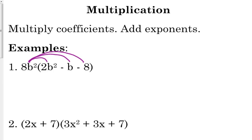So we multiply the coefficients. Eight times two is 16. When you multiply b squared by b squared, you add their exponents. So that becomes b to the fourth.